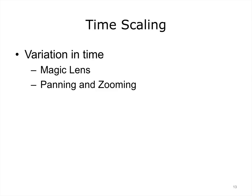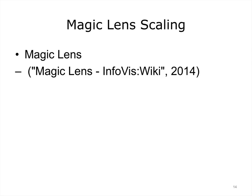The two common approaches to using time scaling are magic lens and panning and zooming. Magic lens follows the analogy of a magnifying glass — a user is given a tool that can be moved over the visualization. All the data covered by the tool is presented in great detail. However, it obstructs its close neighbors.